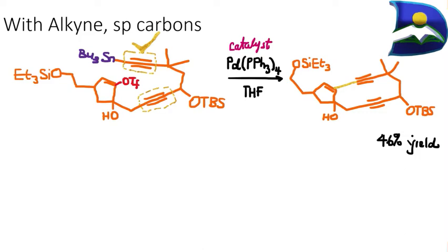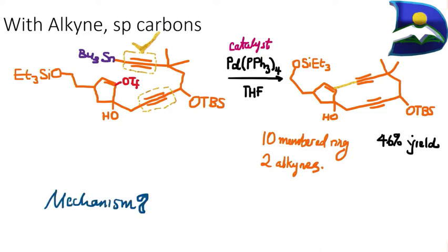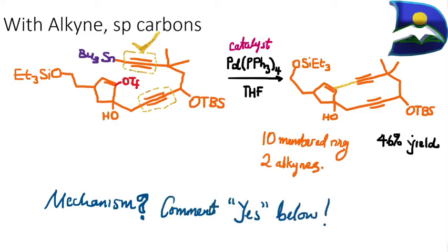This forms a 10-membered ring containing two alkynes. The big question is: what is the mechanism? Type 'yes' in the comment section if you want to see the mechanism — in future videos I'll highlight it for those interested. Don't forget to subscribe to watch out for that.